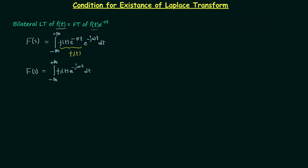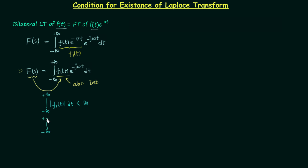So if we want the right-hand side to exist, signal F1(t) must be absolutely integrable. The existence of the bilateral Laplace transform F(s) depends on the absolute integrability of F1(t). The condition for a signal to be absolutely integrable is that the integral from minus infinity to plus infinity of its modulus with respect to time must be less than infinity. Since F1(t) = F(t)·e^(-σt), we need the integral from minus infinity to plus infinity of |F(t)·e^(-σt)| dt to be less than infinity.